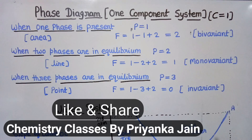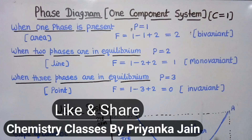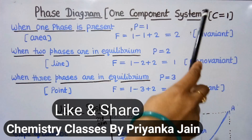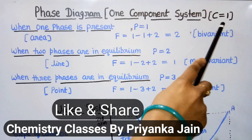Firstly we see the one component system. When in a system only one component is present, then such a system is called a one component system. For example, in the water system where only H₂O is present as a single component, that is called the one component system. For such systems C will be equal to 1.